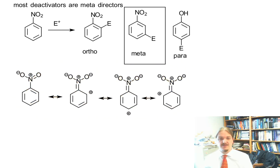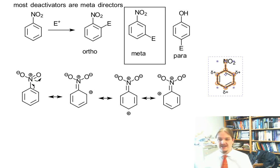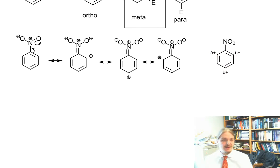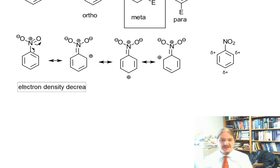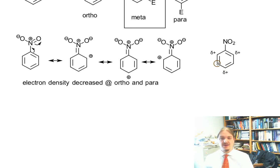Like in my video on the activators, I'm going to pre-draw some of the resonance structures because there are a lot of them. Here I'm showing the resonance structures for nitrobenzene, highlighting how nitrobenzene pulls electron density out of the ring by resonance. We can represent that resonance hybrid where there is a partial positive charge on the ortho and para positions but not at meta. So electron density is decreased at ortho and para.